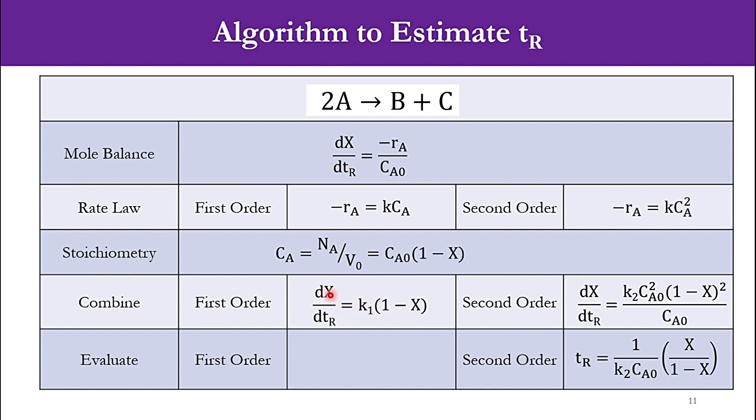We've seen for second order that TR equals 1/(k₂CA0) times X/(1-X). For first order, you can see it will be dX/(1-X). So its integral will be TR equals 1/k₁ times ln(1/(1-X)). It's simple mathematical calculations involved. k₁ represents the rate constant for first order reaction, k₂ for second order. You can see that in second order system that CA0 term has come. For third order it will be CA0², for fourth order CA0³, and so on.